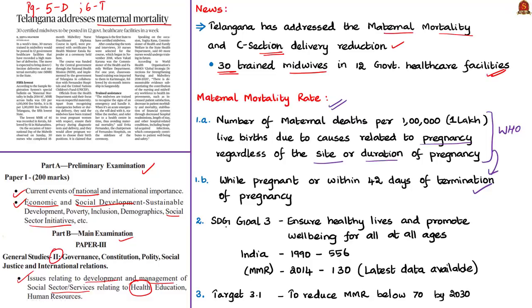The Millennium Development Goal of the United Nations for maternal mortality ratio was to reduce it by three-quarters between 1990 and 2015. India successfully achieved this target by 2014. India had a maternal mortality ratio of 556 in 1990, but it was drastically reduced to 130 by 2014 — almost a 77% reduction.